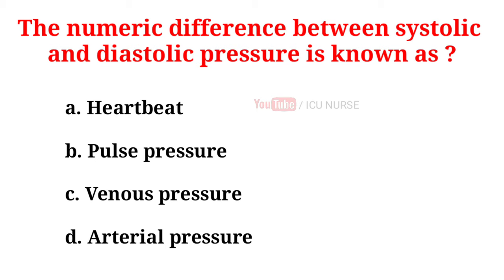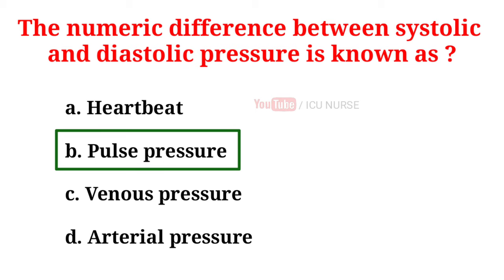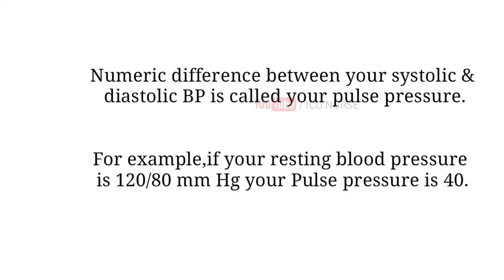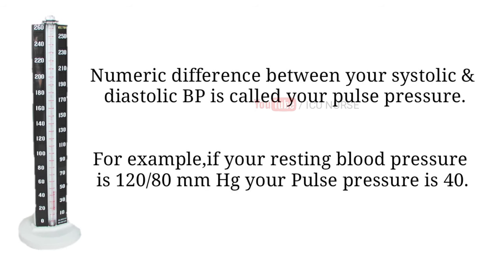The difference between systolic and diastolic pressure is known as: A. Heartbeat, B. Pulse pressure, C. Venous pressure, D. Arterial pressure. And the correct answer is B. Pulse pressure. The numeric difference between systolic and diastolic blood pressure is called your pulse pressure. For example, if your resting blood pressure is 120/80 mmHg, your pulse pressure is 40.